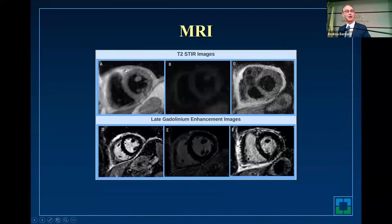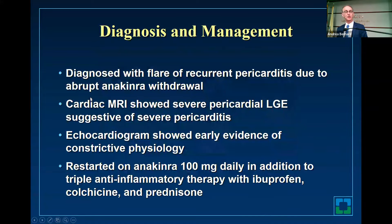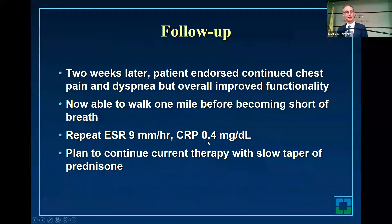His MRI initially showed edema and the late gadolinium enhancement improved — but then he stopped his anakinra cold turkey, and everything came back. It turns out he has rheumatoid arthritis. He was given rilonacept instead of anakinra, and his rheumatoid got worse. He's back on anakinra now and actually doing a little bit better. He had recurrence because of the anakinra withdrawal, but restarted on anakinra and has done well.